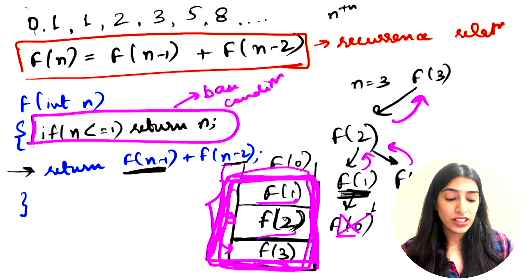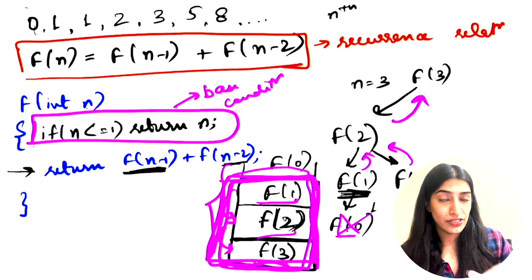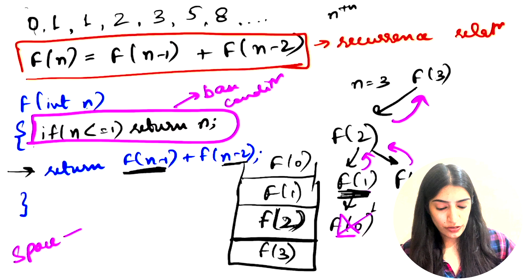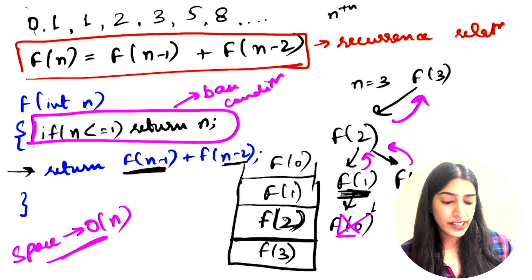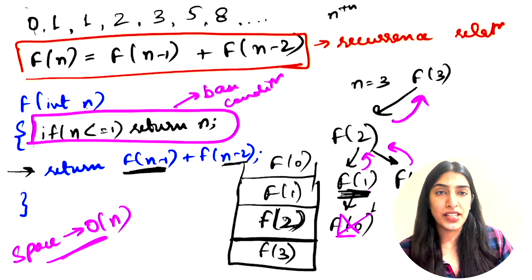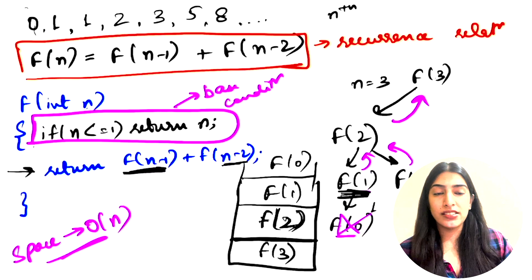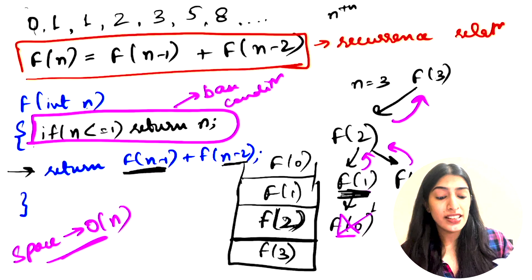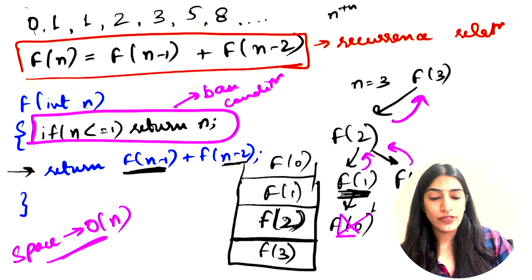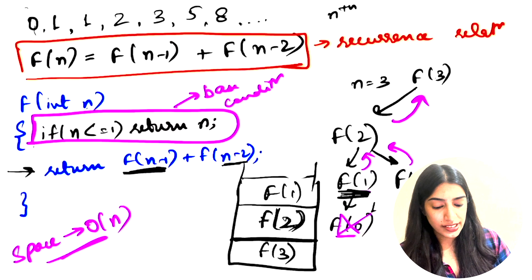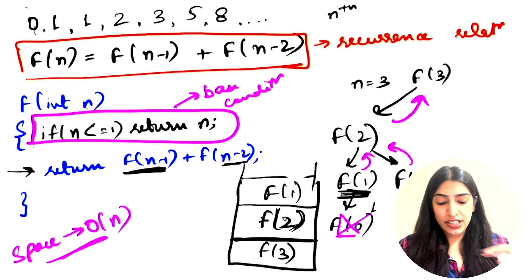The space used is of the order of n. Some of you might wonder whether the stack always has n frames allocated simultaneously. When we talk about space complexity we talk about the worst case — and in the worst case, going from F(3) to F(2) to F(1), note we don't call F(0) separately since we return from F(1) directly. So the space complexity is O(n).